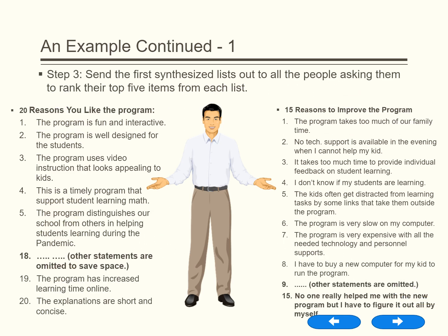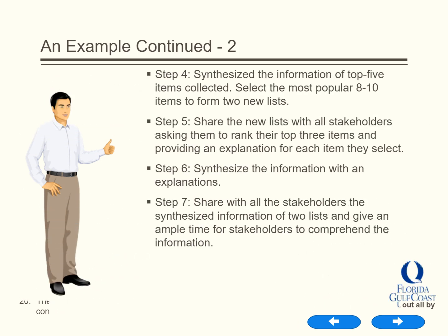Step 3: Send the first synthesized lists out to all the people asking them to rank their top 5 items from each list. The lists look like the examples shown on this slide; the complete list was not provided due to space limits. Step 4: Synthesize the information of the top 5 items collected and select the most popular 8 to 10 items to form two new lists.